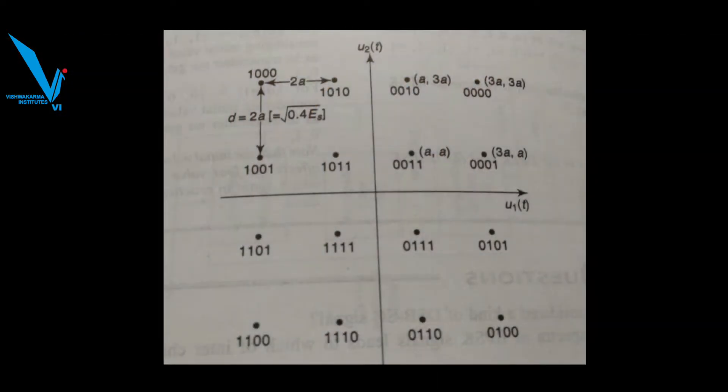If you see from the diagram, we have four symbols in one quadrature. Likewise, we have 4 in the second quadrature, 4 in the third, and 4 in the fourth. Likewise, we have 16 symbols. And if you see these symbols, since the variation is in amplitude and phase, they don't lie on a circumference of a circle.